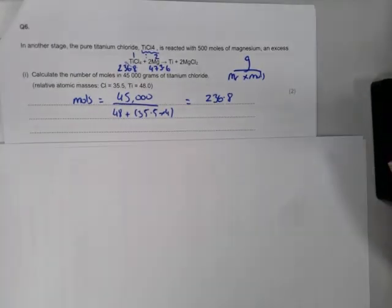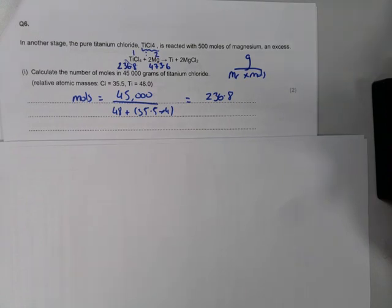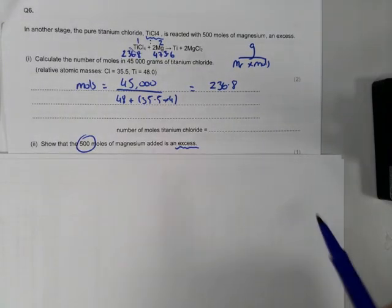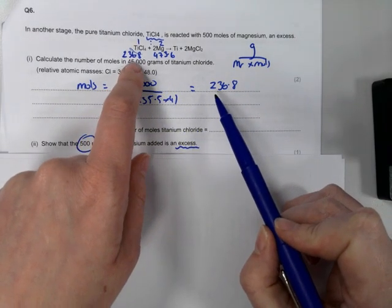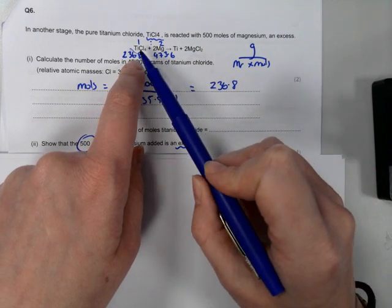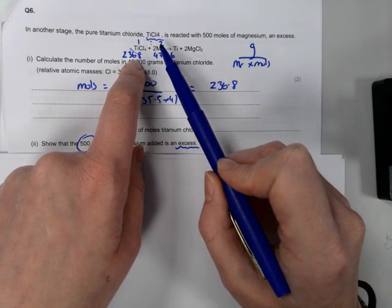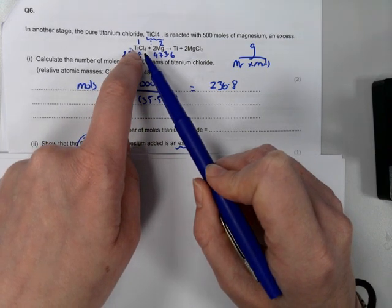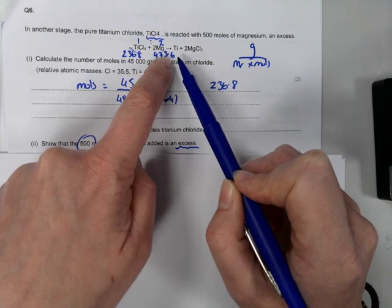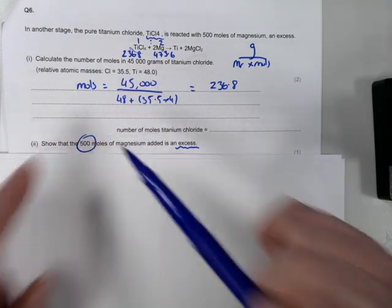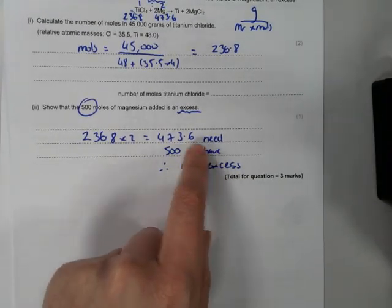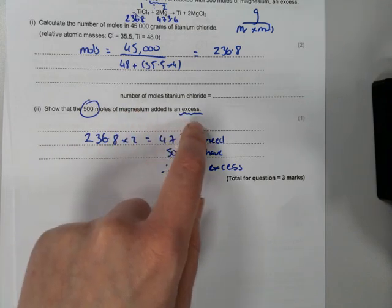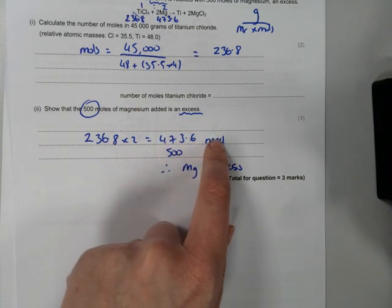They haven't specified significant figures, so you could round that to 237. The second part says: show that 500 moles of magnesium added is an excess. The ratio between TiCl₄ and magnesium is 1:2, because there's a big 2 in front of magnesium. That means I need double the moles of magnesium — 473.6 moles. They're adding 500, which is more than needed, so magnesium is in excess.